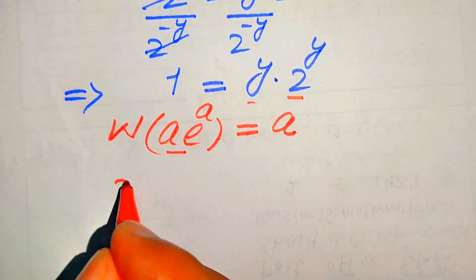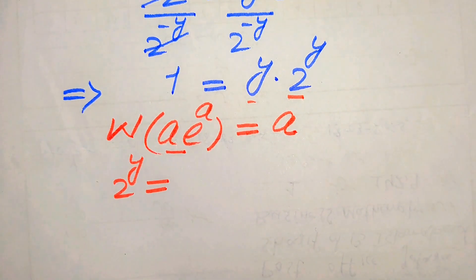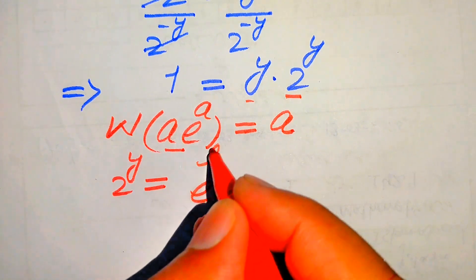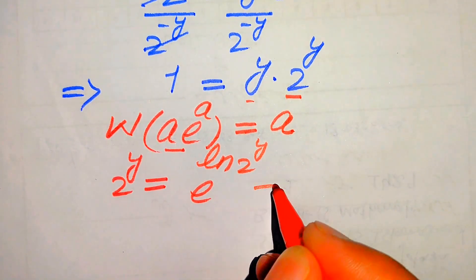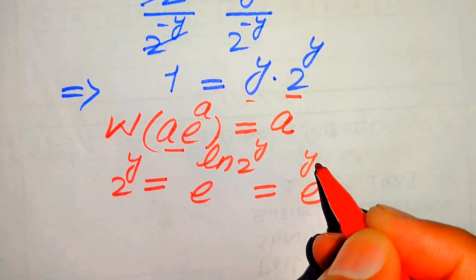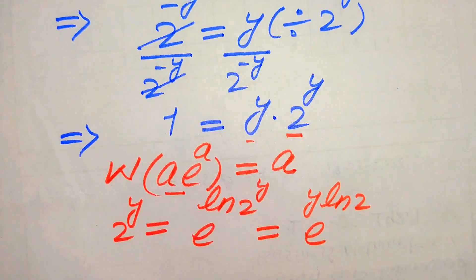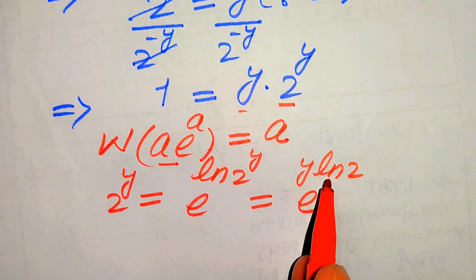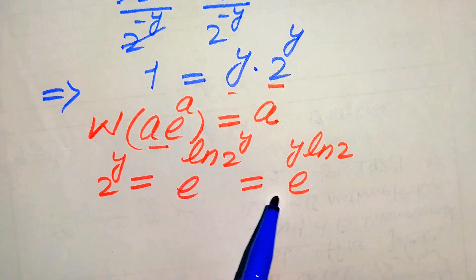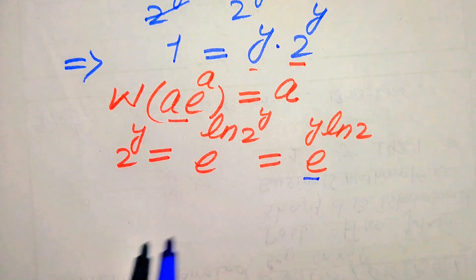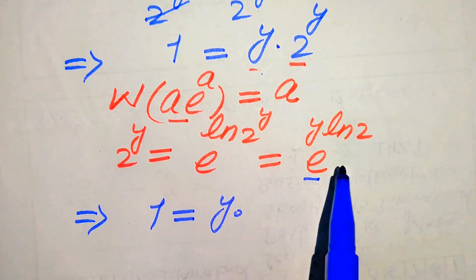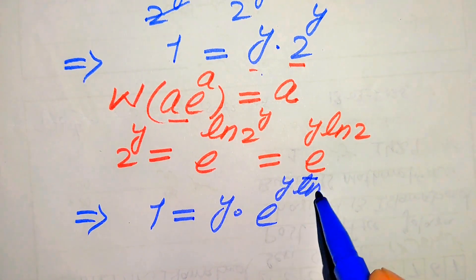We focus on the term 2 to the power of y. We rewrite it by applying log and anti-log simultaneously: 2 to the power of y equals e to the power of (log of 2 to the power of y). Using the log power property, we move y to the front, giving e to the power of (y times log 2). We then replace 2 to the power of y with e to the power of (y times log 2), so our equation becomes 1 equals y times e to the power of (y times log 2).